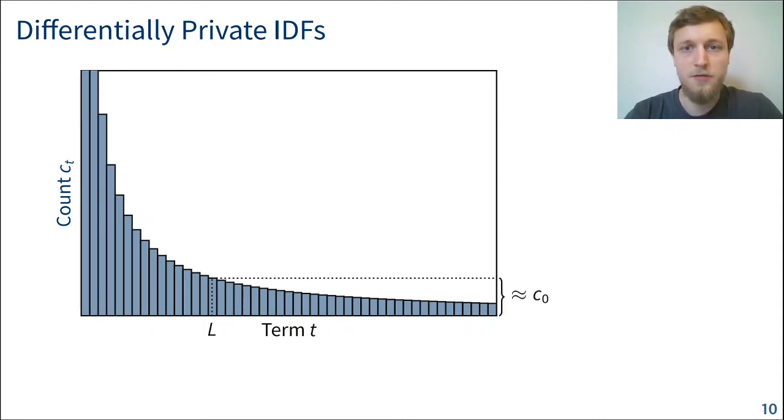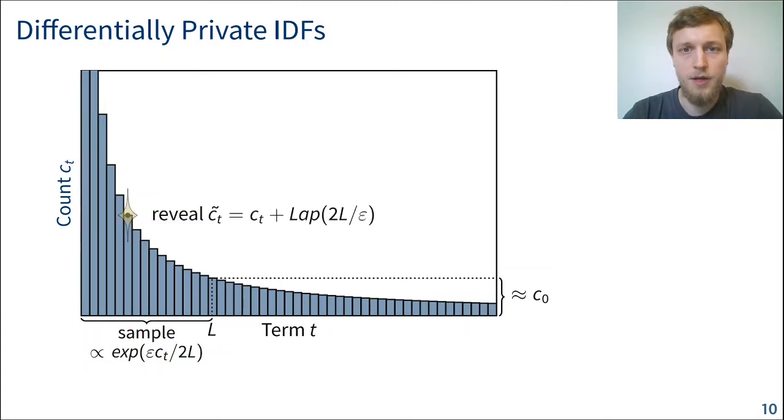So far we didn't even consider the database. We just defined the default value that we assigned to most of the elements in the vocabulary. But how do we select the top L words in our database? For that we're going to use the exponential mechanism, and it has been shown that it is optimal for top L selection. So what it does is samples words proportionally to the exponential of the actual count. And once we have sampled the word, we can reveal its count where we disturb the count with a Laplace mechanism. So doing that L times reveals an approximation of the top L terms, so the L most common terms where the counts have been noised with Laplace noise.